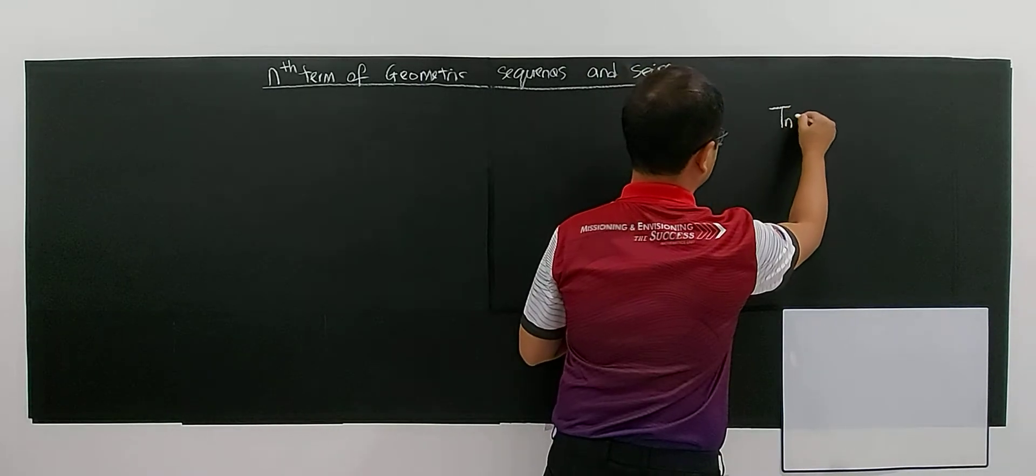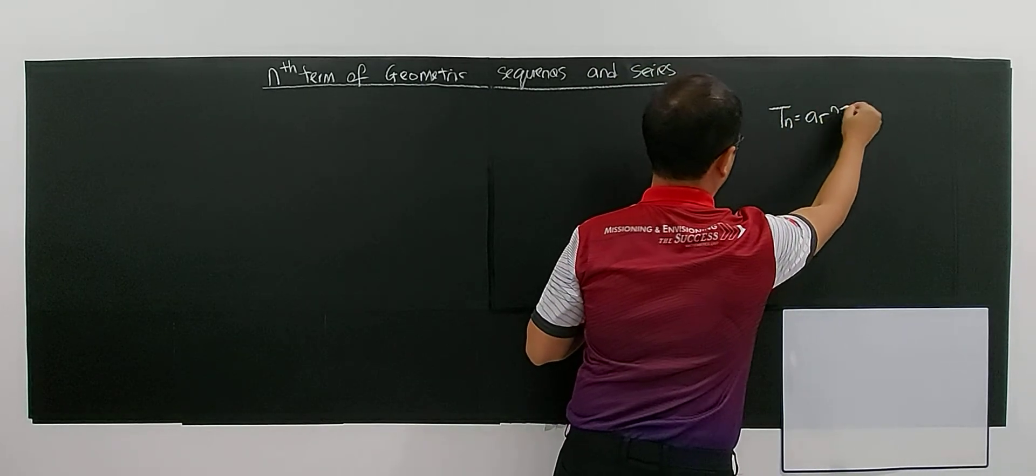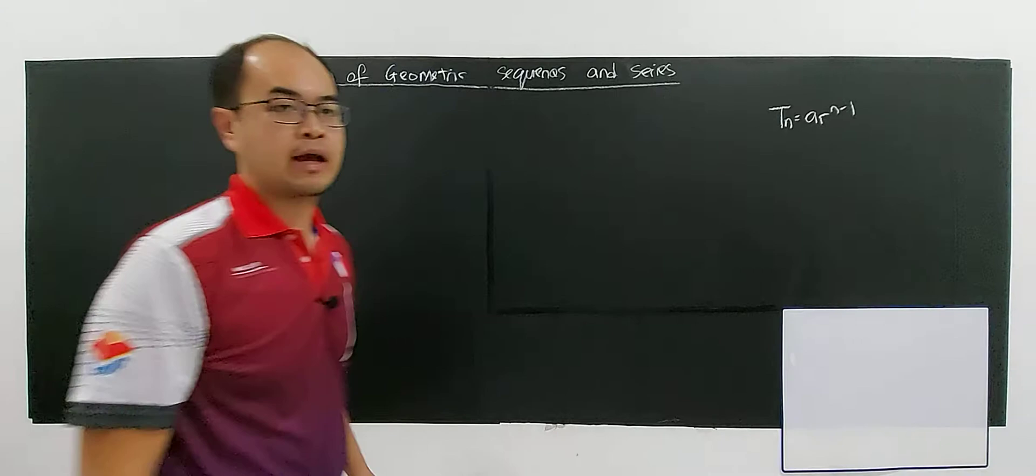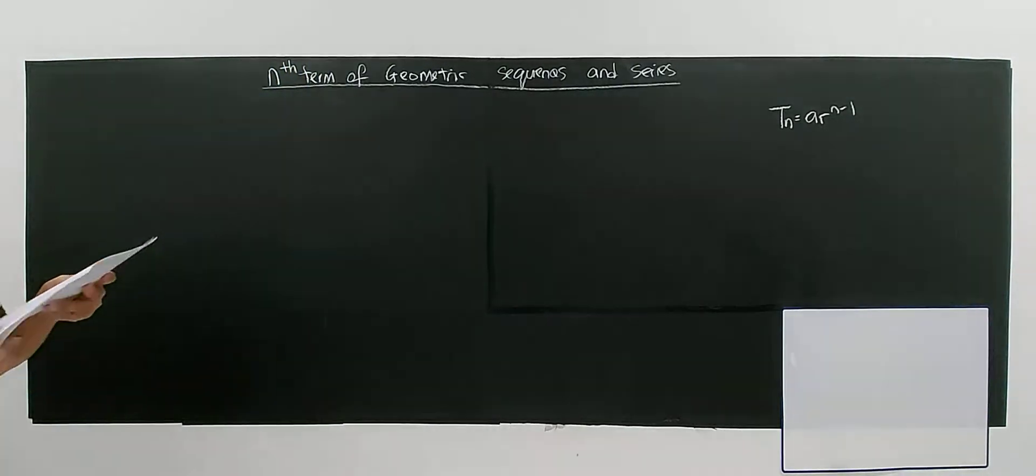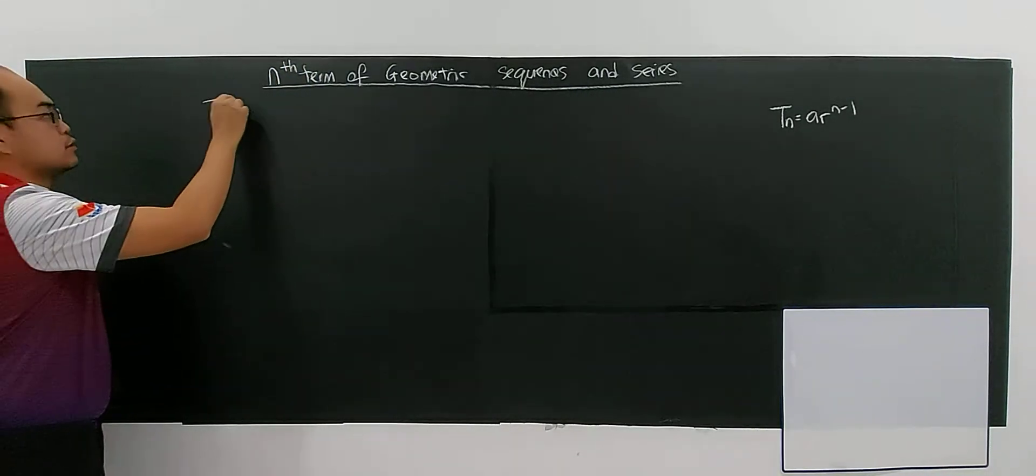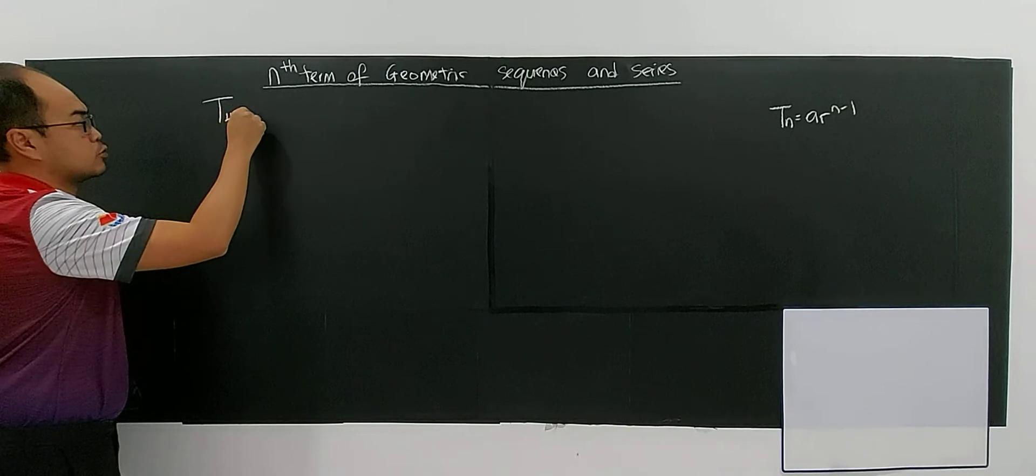Immediately, you know that the formula for the nth term is ar^(n-1). The fourth term of a geometric sequence is 48.